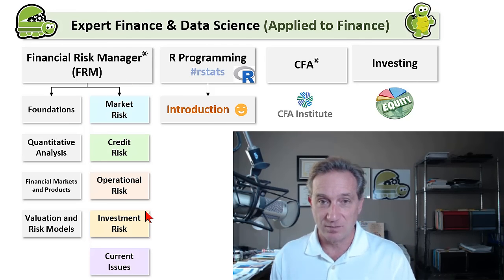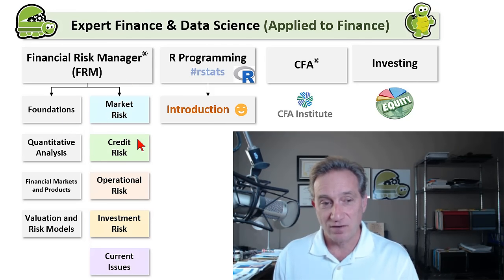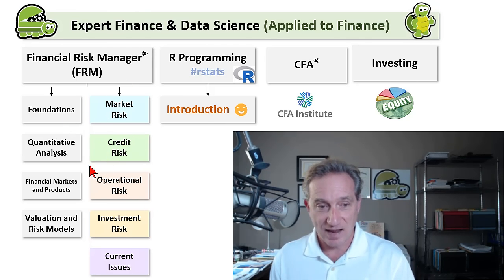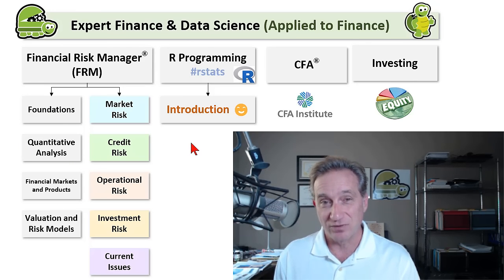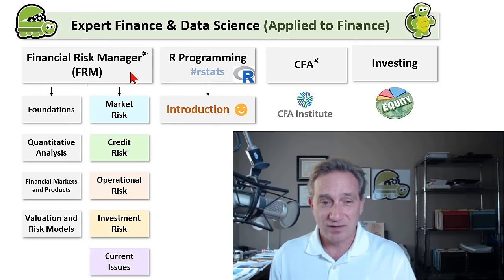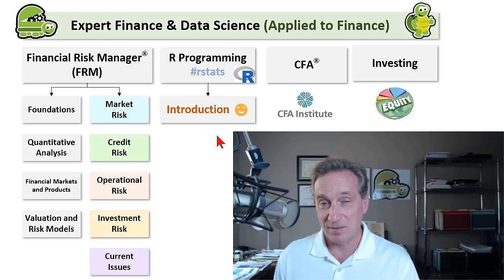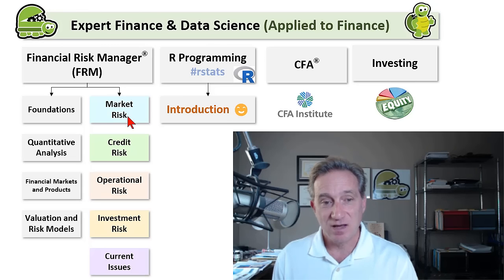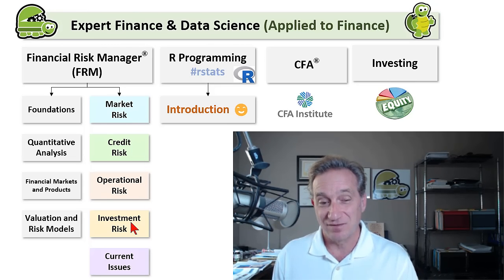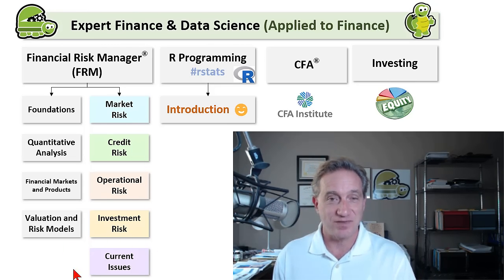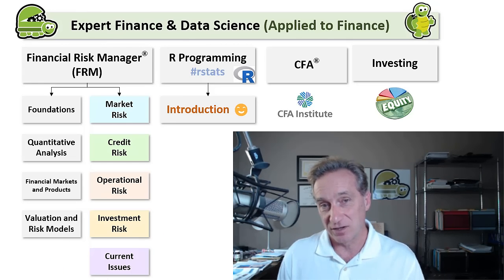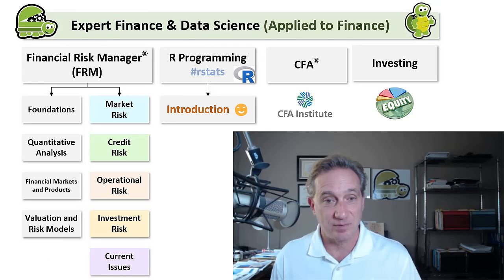That's the colored column here. This is more advanced and has some of Part One as a prerequisite. Risk is a quantitative field, so we do need to be comfortable with math — for example, basic calculus is used. Then we look at market risk, credit risk, operational risk, investment risk, and current issues. An example of current issues would be cybersecurity.